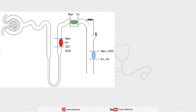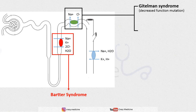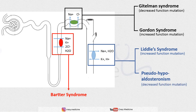Now let us summarize what we studied. Disease of the sodium-potassium-2-chloride pump in the thick ascending loop of Henle includes Bartter syndrome. Disease of the NaCl pump in the distal convoluted tubule includes Gitelman syndrome — loss-of-function mutation — and Gordon syndrome — gain-of-function mutation. Disease of the ENaC channel in the collecting duct includes Liddle syndrome — gain-of-function mutation — and pseudo-hypoaldosteronism — loss-of-function mutation.